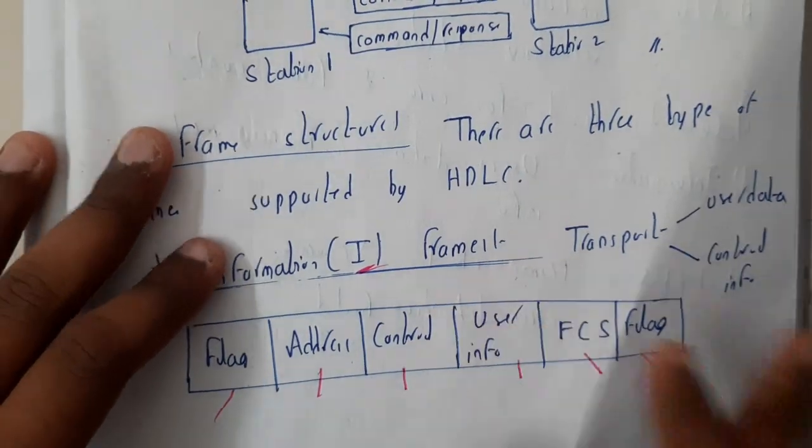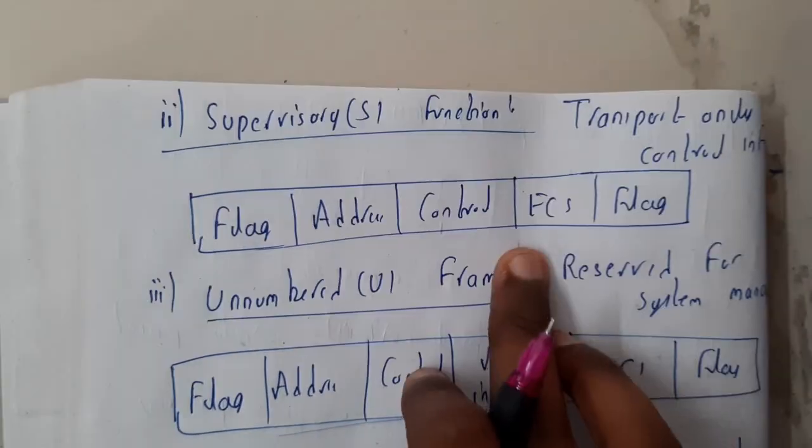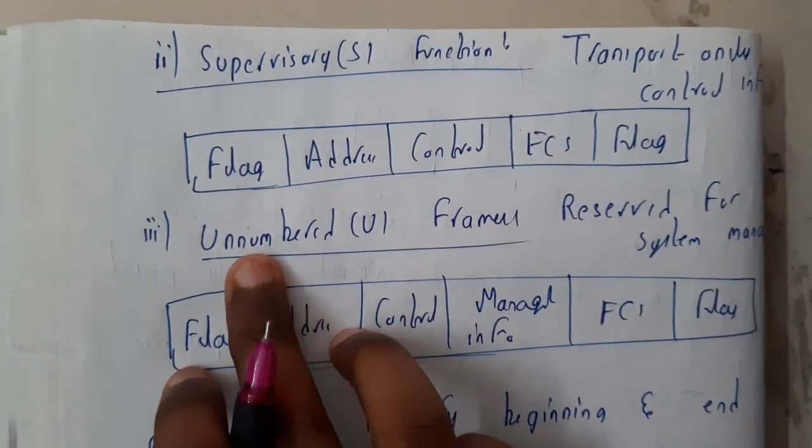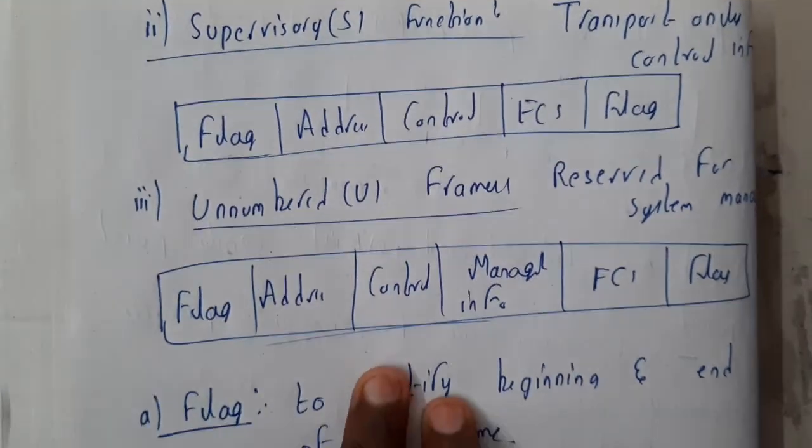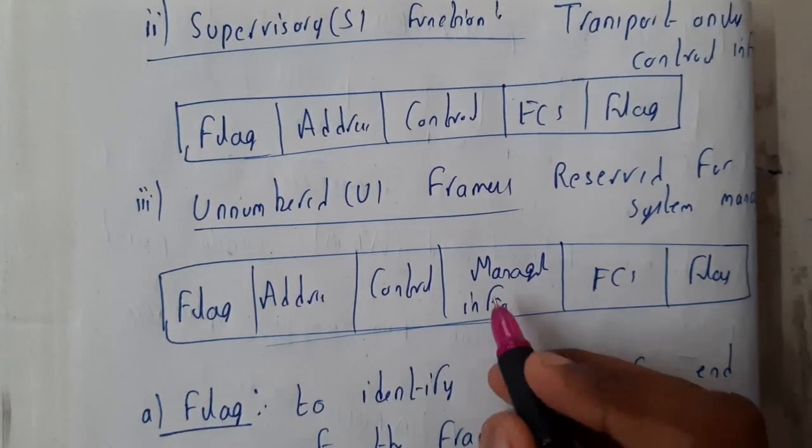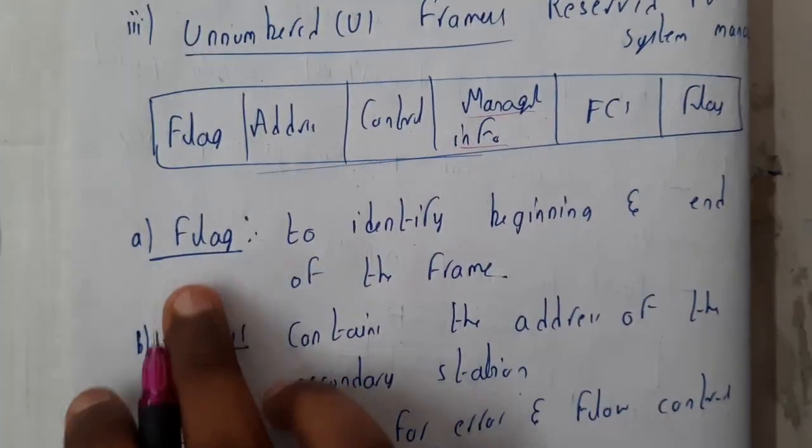The next type is supervisor. Supervisor will just remove the user information. What is the need for supervisor? To observe the users. That's why we remove that. In unnumbered frames, instead of user information, you'll be writing the managing information.